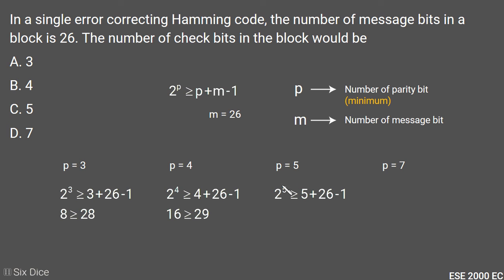For p equals 5: 2 to the power 5 is 32, which is greater than 30. p equals 7 also satisfies the equation, but we need the minimum number of parity bits. Therefore, our answer is option C, which is 5.